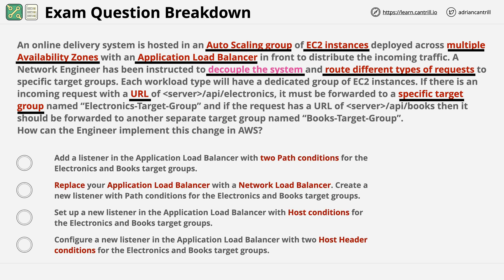Here is what I found as important in the answers. The first answer mentions two path conditions, and that's important because other answers mention different condition types. The second answer suggests replacing your application load balancer with a network load balancer — a relatively major architectural change. The third answer mentions host conditions, and the fourth mentions host header conditions. So we have two different approaches: one recommending changing an ALB to a network load balancer, and three others talking about different types of conditions.